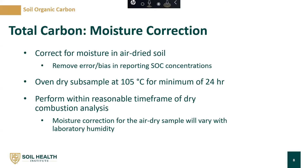Since we are using air-dried soil, we recommend correcting for moisture to help remove any error in final soil organic carbon concentrations. We recommend using an oven-dried subsample dried at 105 degrees C for a minimum of 24 hours. This moisture correction should be performed within a reasonable time frame of the dry combustion analysis. It will vary with laboratory humidity, which may be a bigger deal for folks in humid regions or labs that don't have moisture control built in.